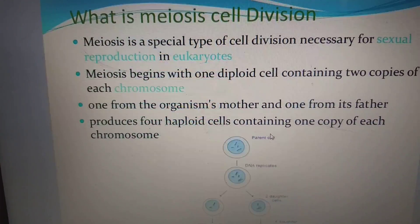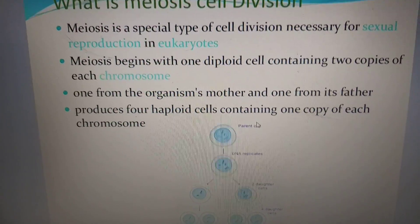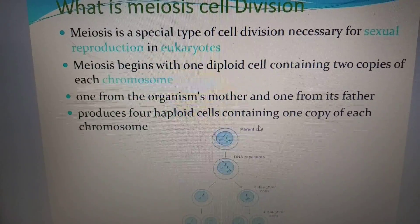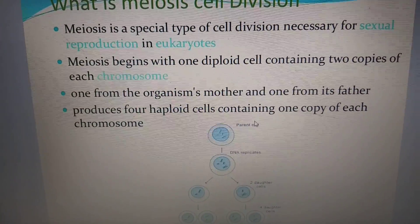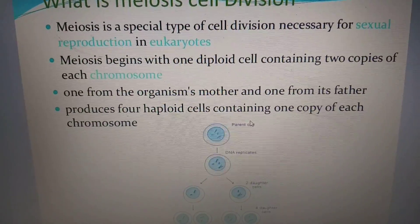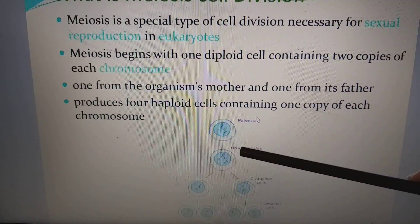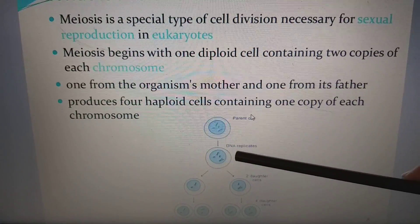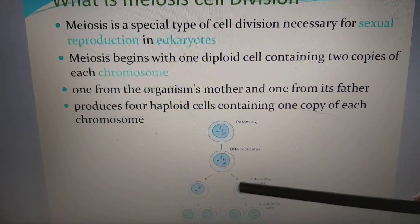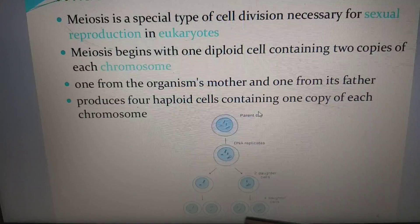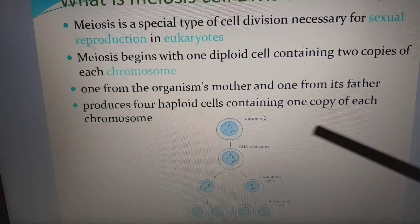Meiosis is a special type of cell division necessary for sexual reproduction in eukaryotes. Meiosis begins with one diploid cell containing two copies of each chromosome — one from the organism's mother and one from its father — and produces four haploid cells containing one copy of each chromosome. At the first interphase, DNA undergoes replication. The interphase is divided into G1, S, and G2. In the first meiotic division, the cell undergoes meiosis and two daughter cells are formed. In the second meiotic division, four daughter cells are formed with a haploid set of chromosomes, different from the parent cell.